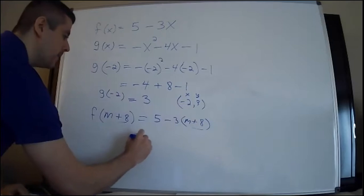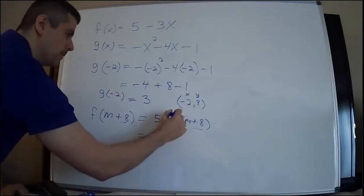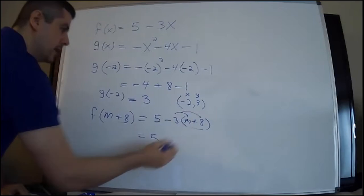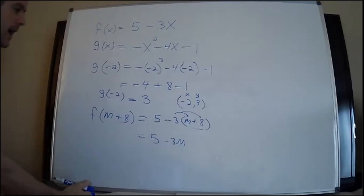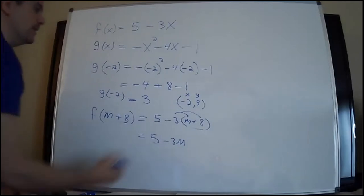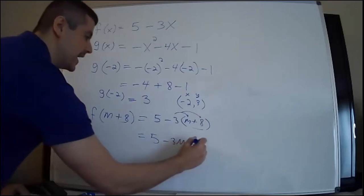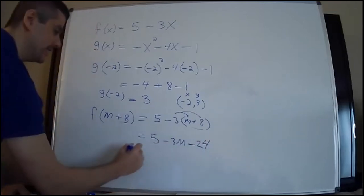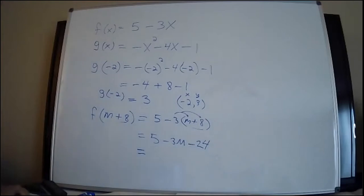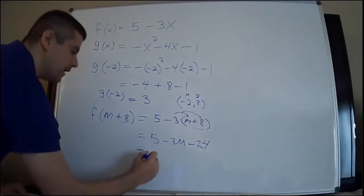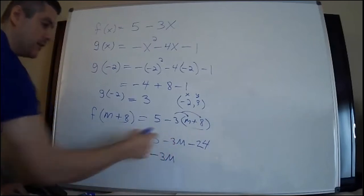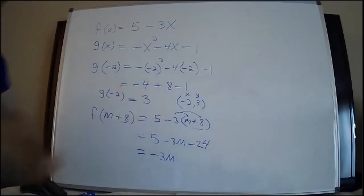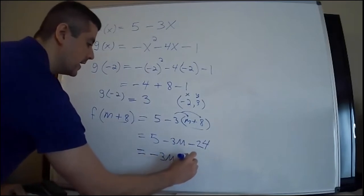Now you got to distribute there. You got to hop the fence and say hello to everybody in the party. Negative 3M, negative three times positive eight is -24. Five take away 24. I need to use my fingers. The number's too big. I'm pretty sure that's -19. So I like to write the letter first. You don't have to. -3M doesn't have anything to combine with. And I do 5 - 24 and I get -19.